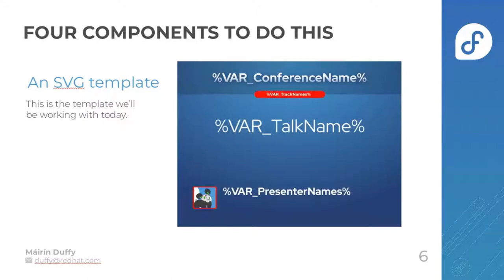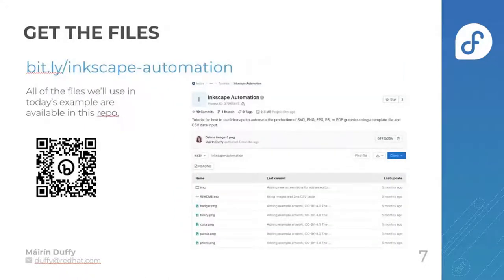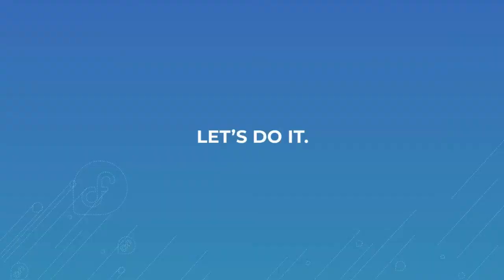The final component is an SVG template. You can make one from scratch or start with the one in the Git repo and modify it. All the files you need are available at bit.ly/inkscape-automation.